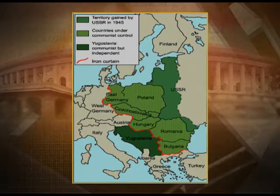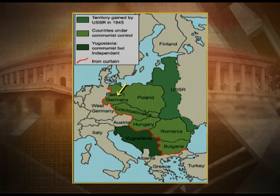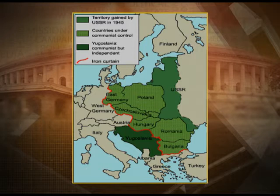Germany in particular got divided into East and West Germany. The red line runs through Germany, with East Germany being smaller in territory and West Germany being the larger part. The darkest green on the map shows territory gained by the USSR in 1945, while the middle green represents countries under communist regimes. Yugoslavia was communist but independent. Germany, the epicenter of World War II, itself got divided between east and west.